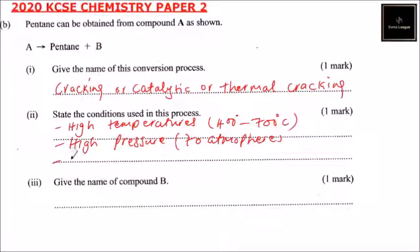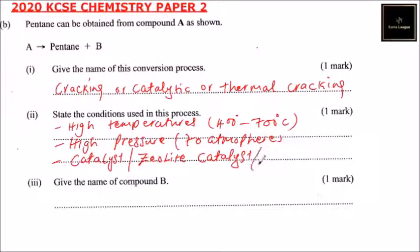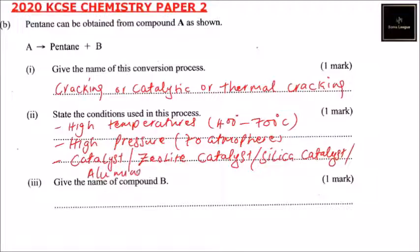The other condition is a catalyst. You can mention a zeolite catalyst, or a silica catalyst, or an alumina catalyst. You can just say catalyst, or name a specific one — zeolite, silica, or alumina catalyst.